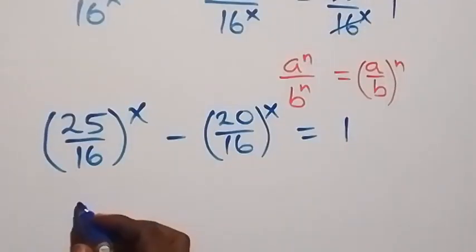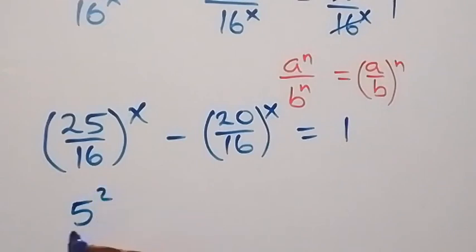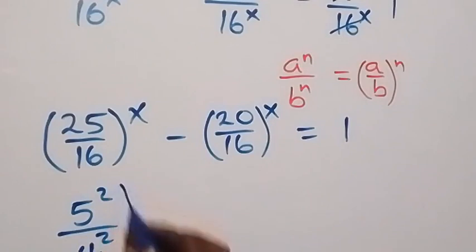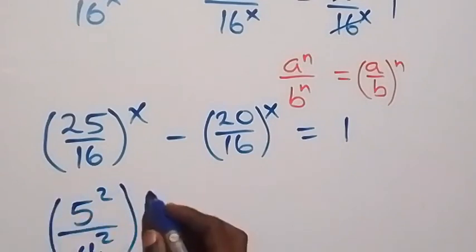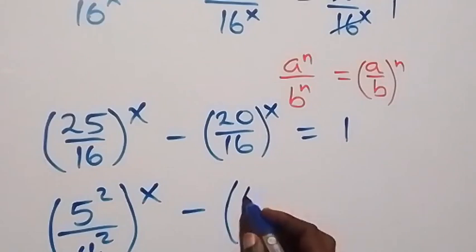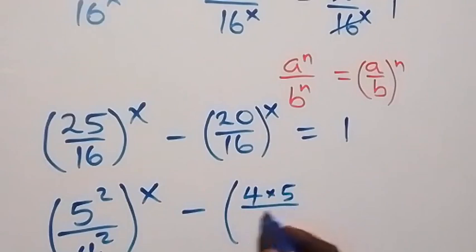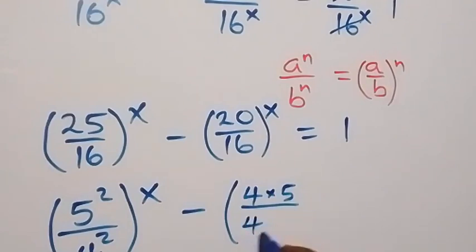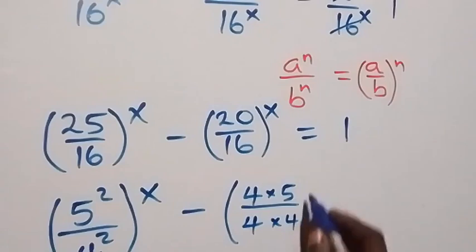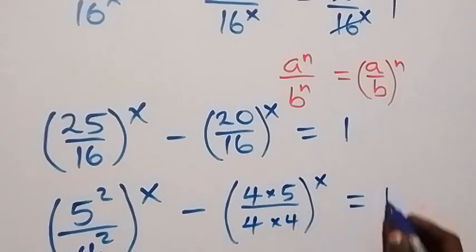Then 25 is the same thing as 5 squared. Then 16 is the same thing as 4 squared. Then for the middle term, we can write 20 as 4 times 5, then divided by 16 as 4 times 4, all raised to power x, now equals 1.